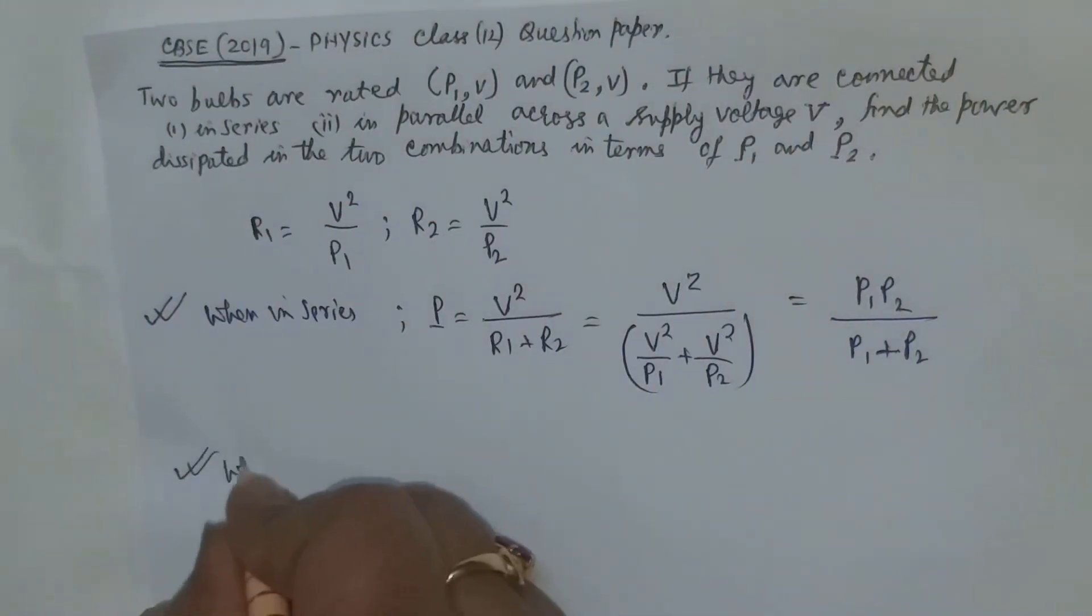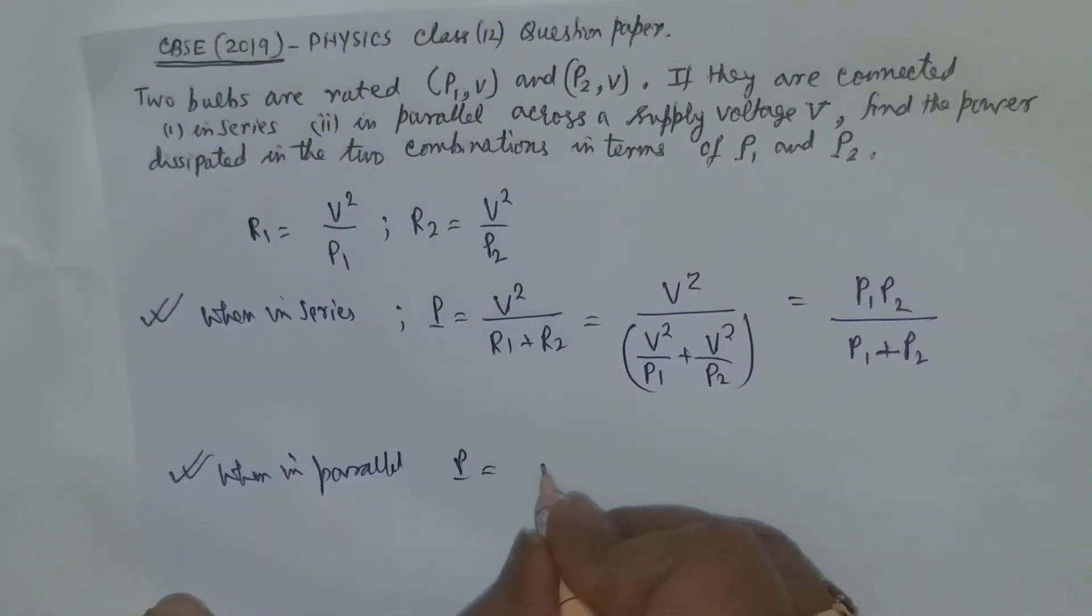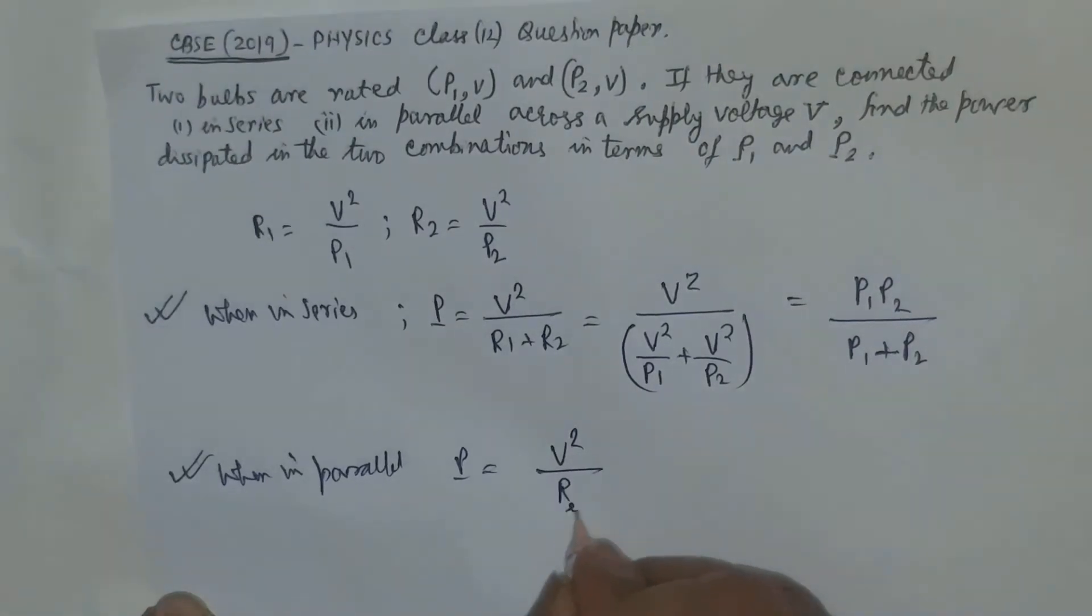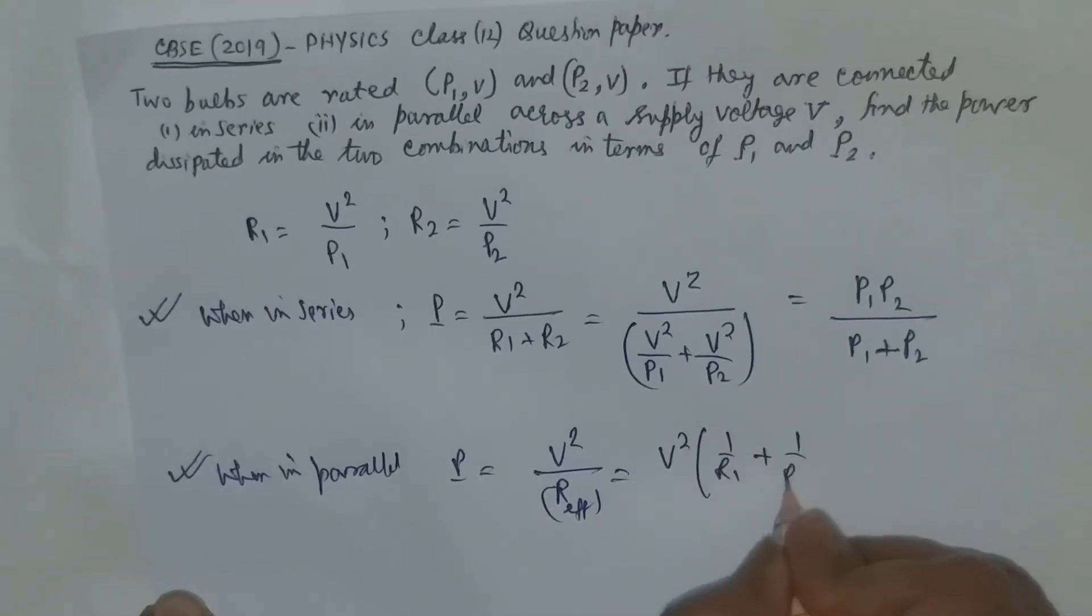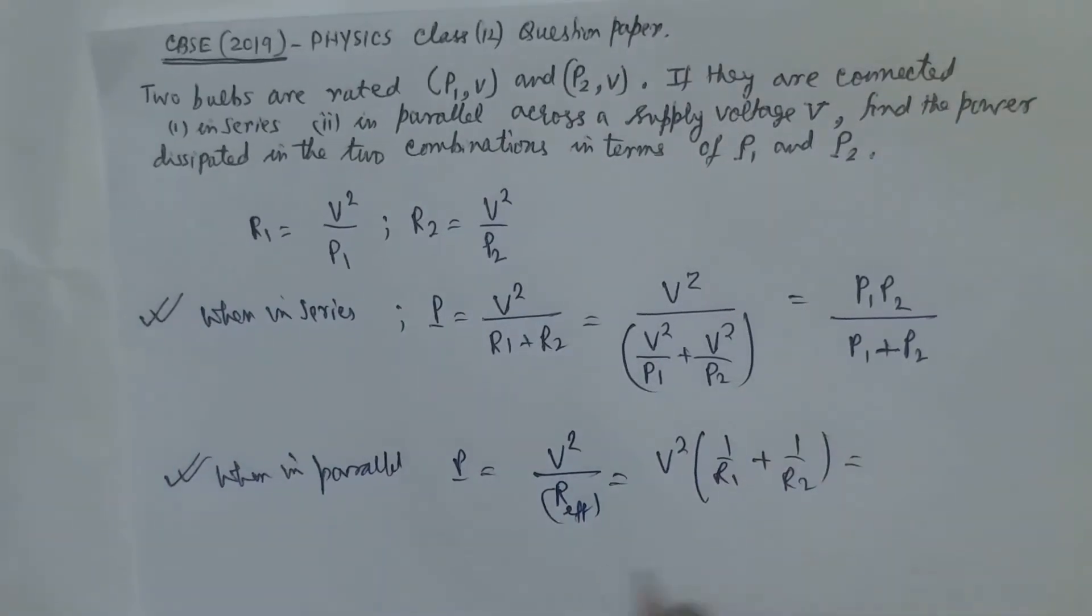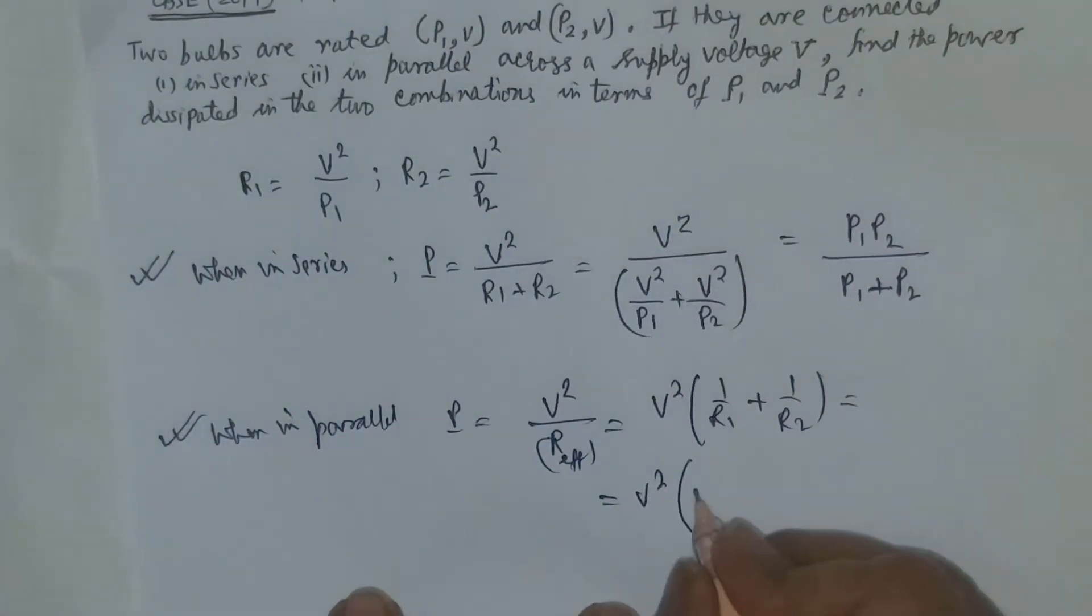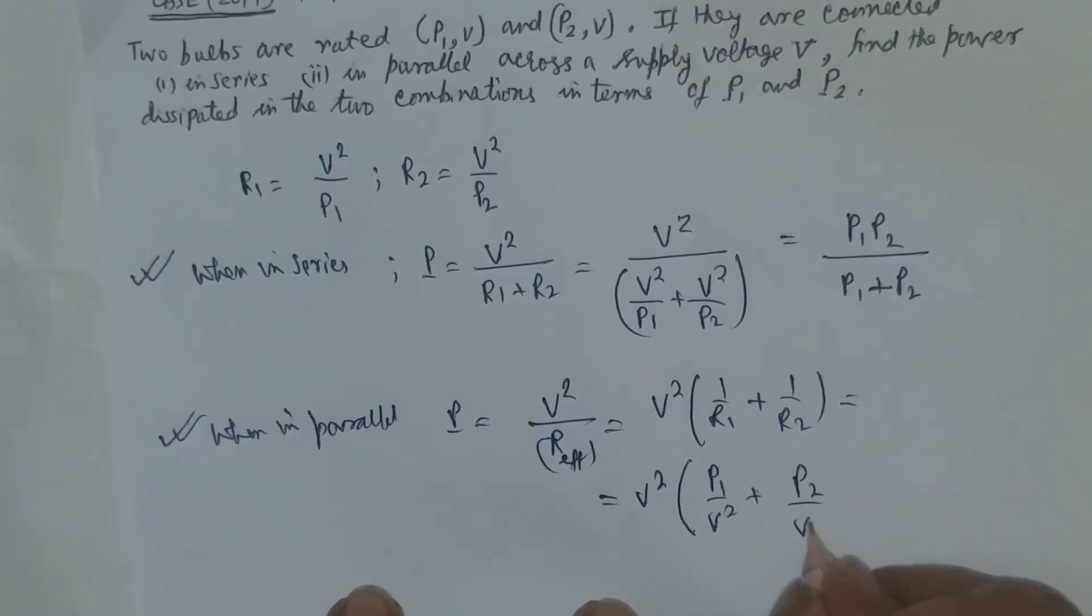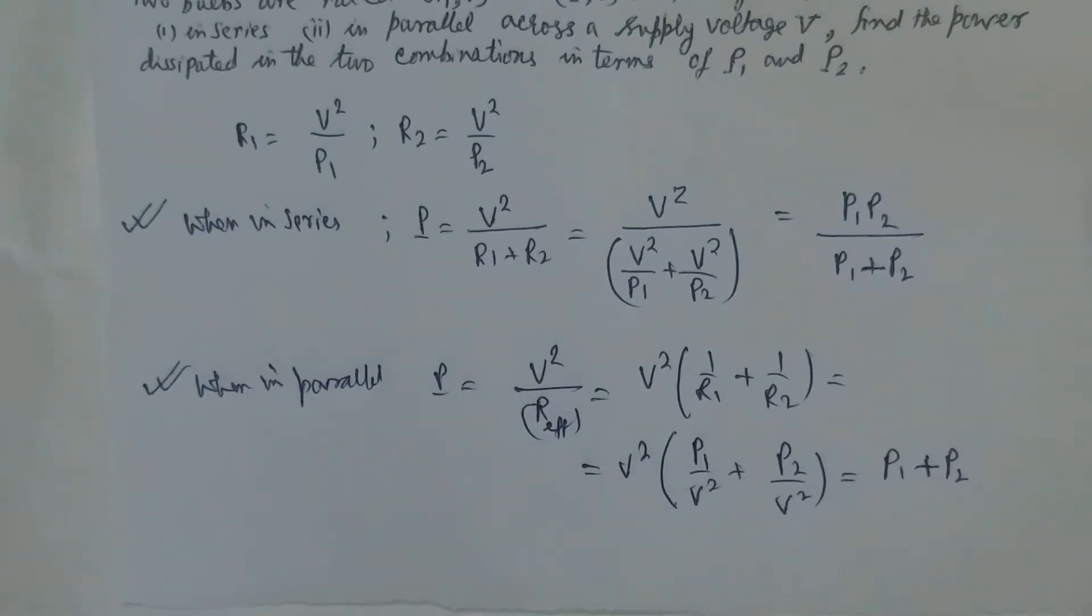Now when in parallel, this power P will be equal to V² by effective resistance R_effective. Now 1 by R_effective is equal to 1 by R1 plus 1 by R2. So here it will be V², and what is 1 by R1? 1 by R1 is equal to P1 by V². 1 by R2 is P2 by V². So we have P1 plus P2 is the net power in case of parallel arrangement.